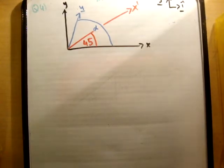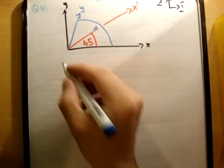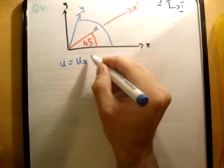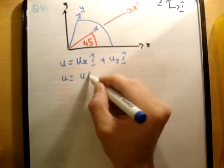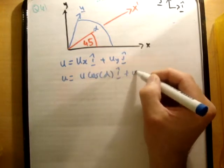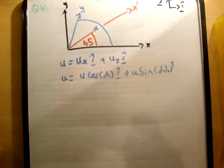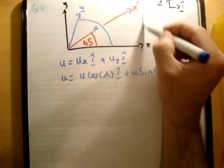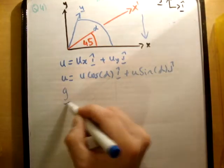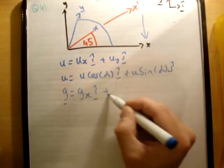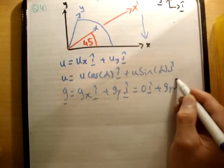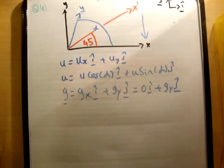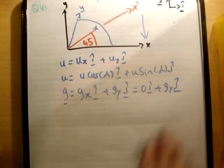So the next thing we need to do is draw the initial velocity vector. We're going to resolve it with respect to the x axis. So u is equal to u sub x i hat plus u sub y j hat. And u is equal to u cos alpha i plus u sine alpha j. And the gravity vector, of course, is just acting in the y. So g is equal to g sub x i hat plus g sub y j hat is equal to 0 i hat plus g sub y j hat. So the gravity vector just acts in the y dimension.